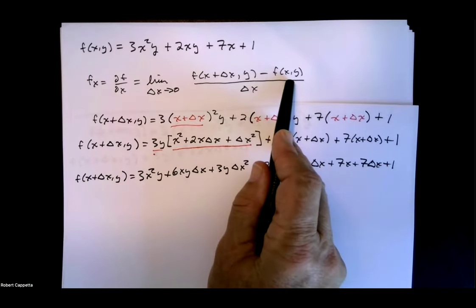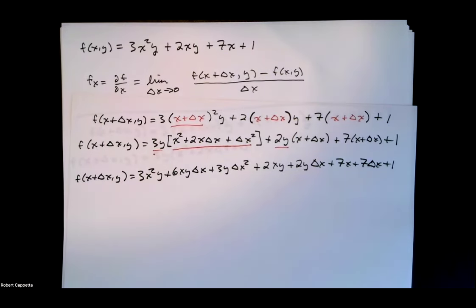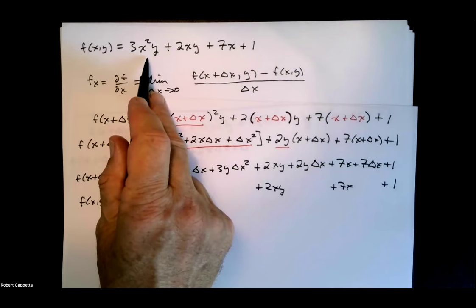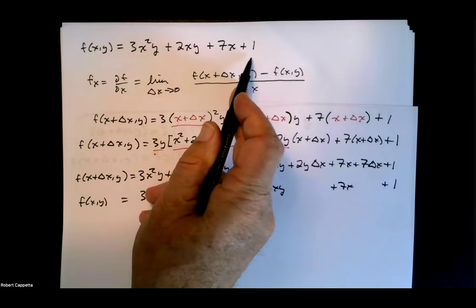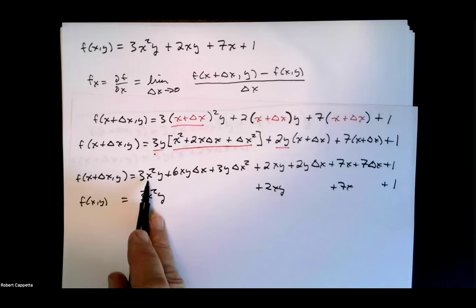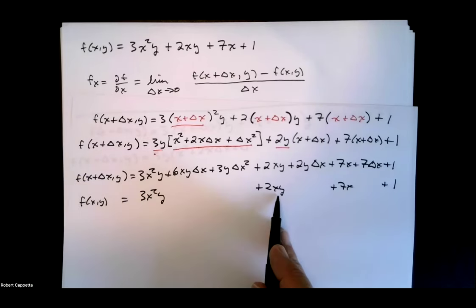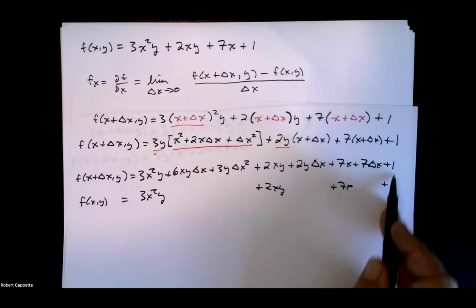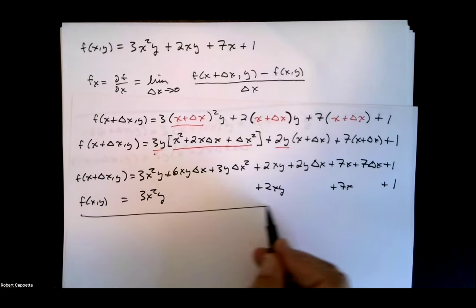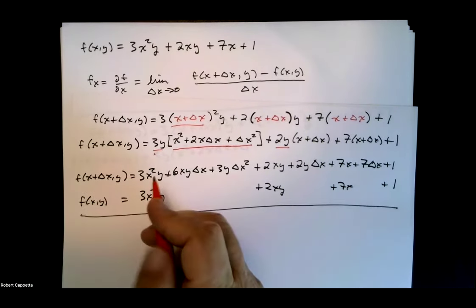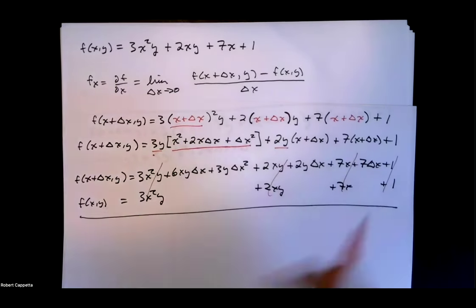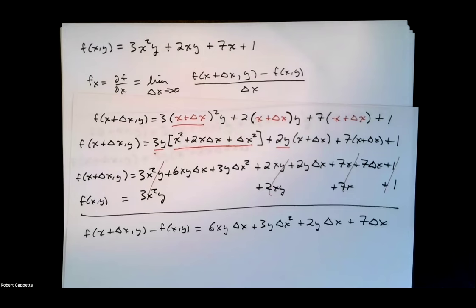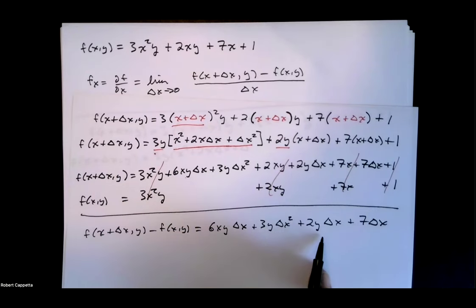Now I subtract f of x, y, which is 3x squared y plus 2xy plus 7x plus 1. Writing it directly underneath term by term — 3x squared y under 3x squared y, 2xy under 2xy, 7x under 7x, and 1 under 1 — and subtracting. These all subtract out, and what remains is 6xy delta x, plus 3y delta x squared, plus 2y delta x, and 7 delta x.